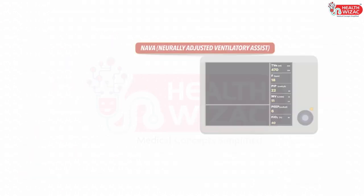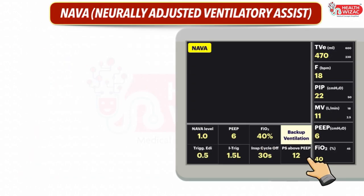In NAVA mode, we have to set NAVA level, PEEP, FiO2, Edi trigger, inspiratory trigger, inspiratory cycle off time, PS above PEEP, and backup ventilation settings.